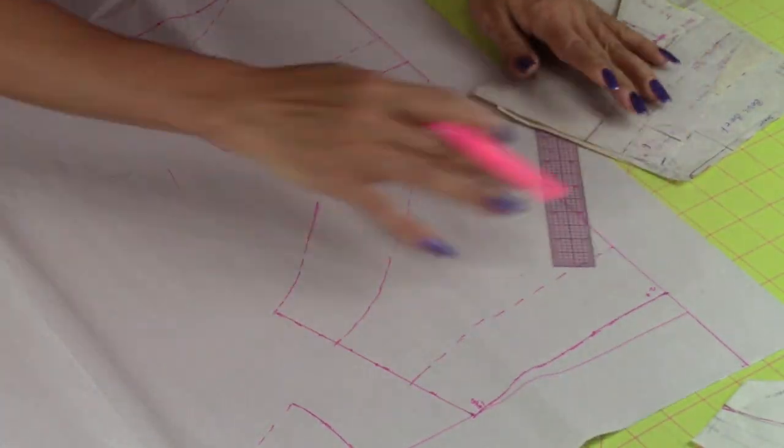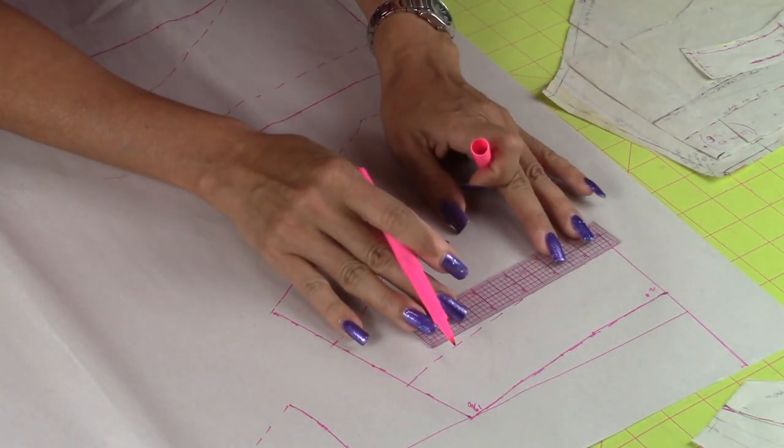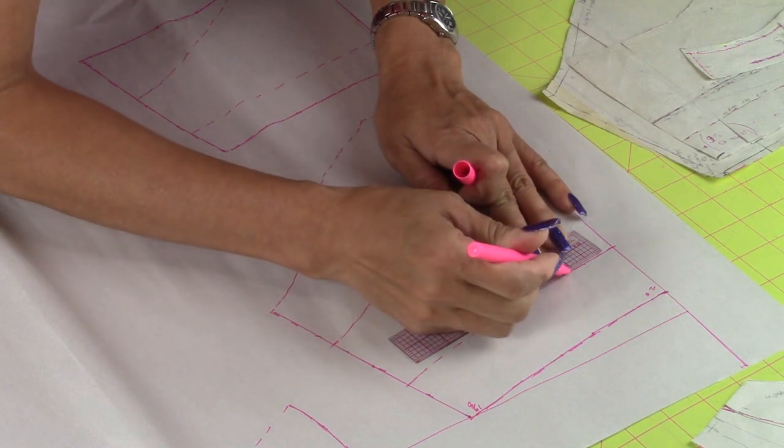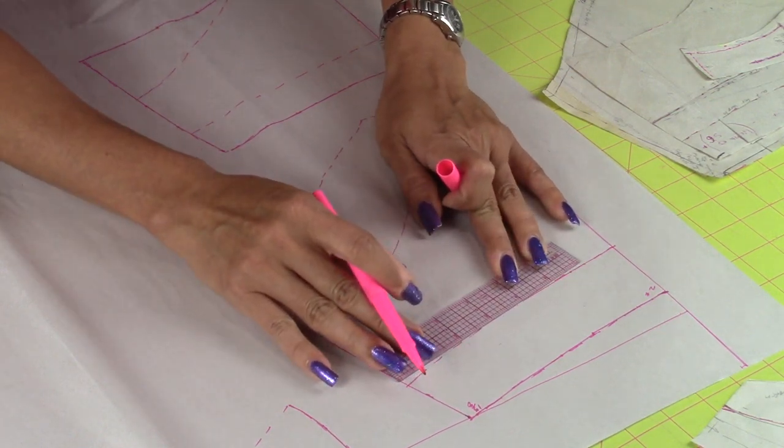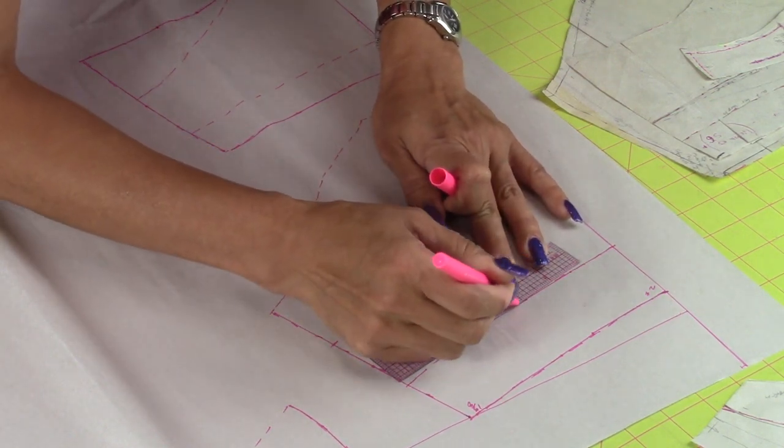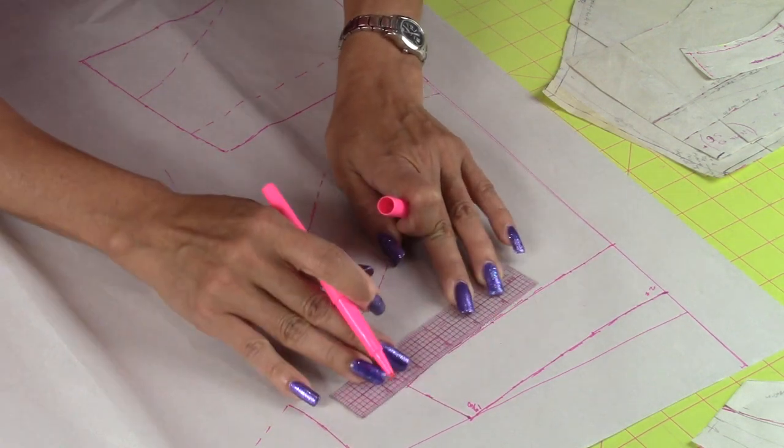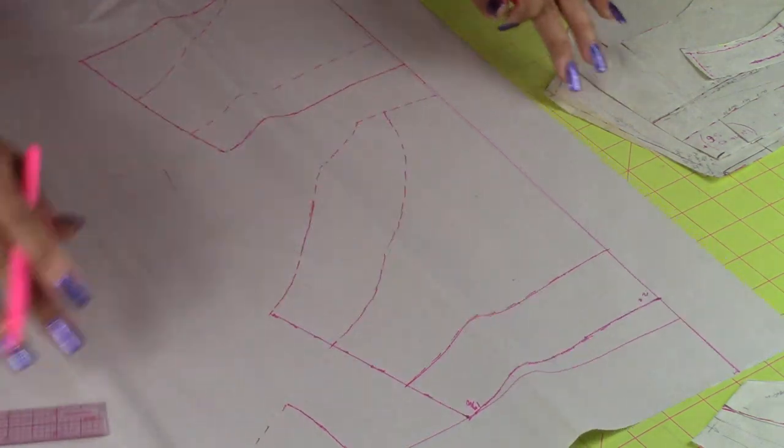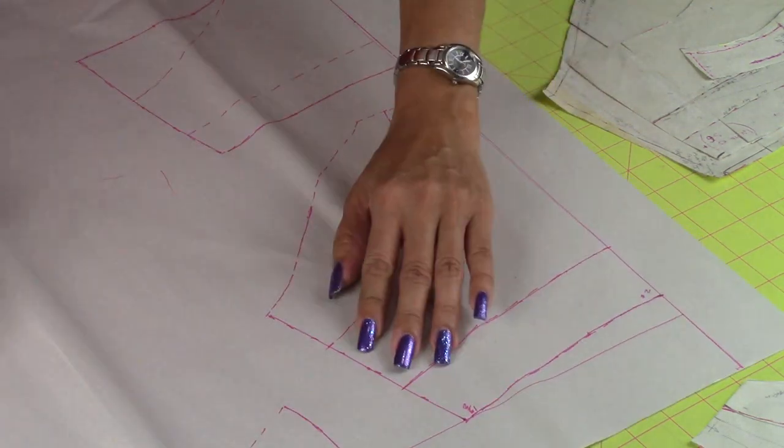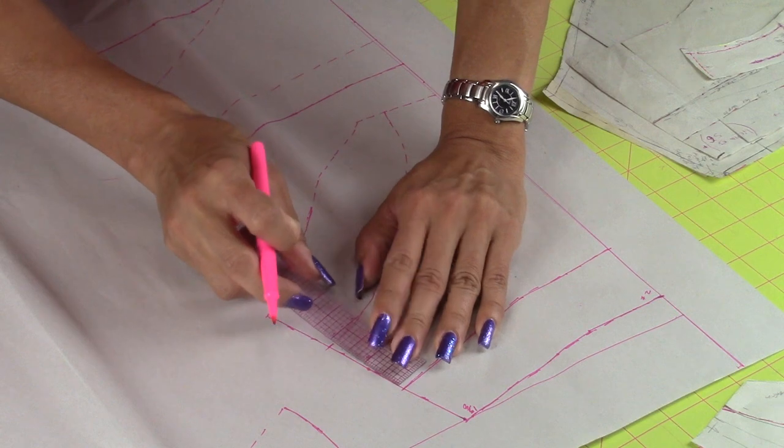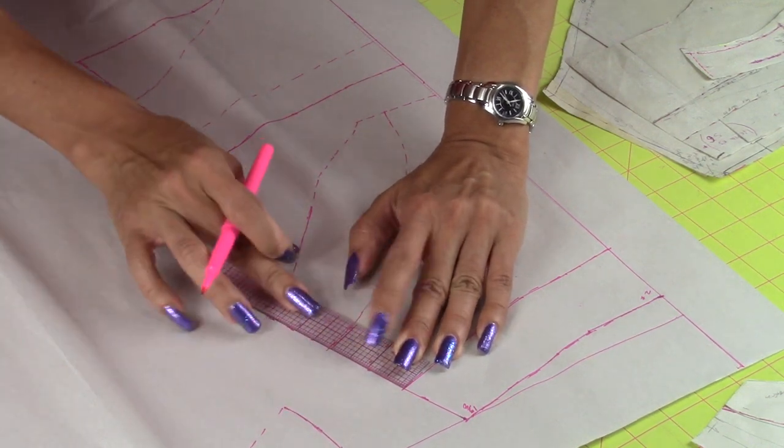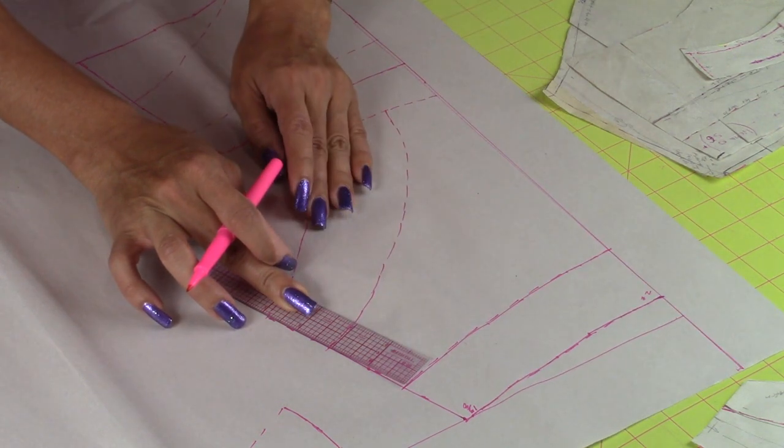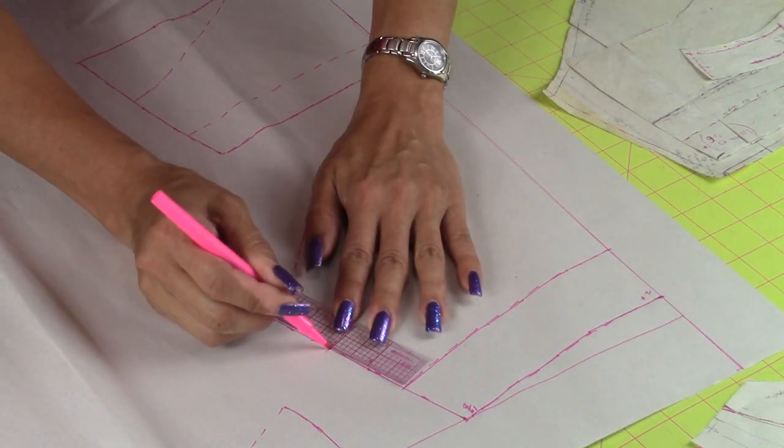So then we mark it, or we use our ruler. And then, over here, I made it 2 inches wide. Then you mark it right here.